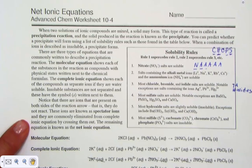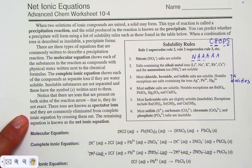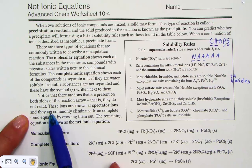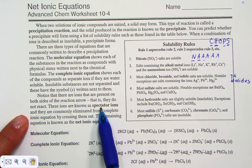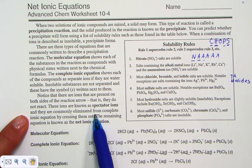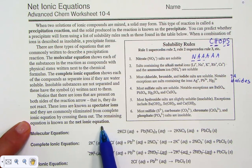Notice that there are ions present on both sides of the reaction now. Those ions that do not react are known as spectator ions. They can be eliminated from the complete ionic equation to form the net ionic equation.